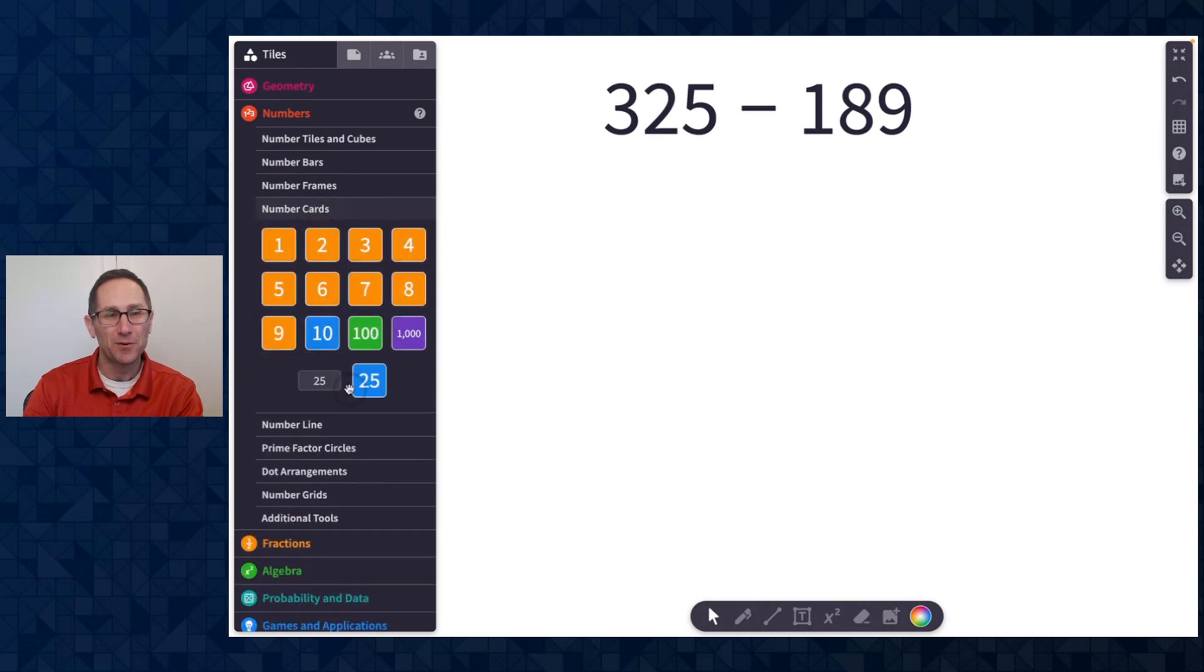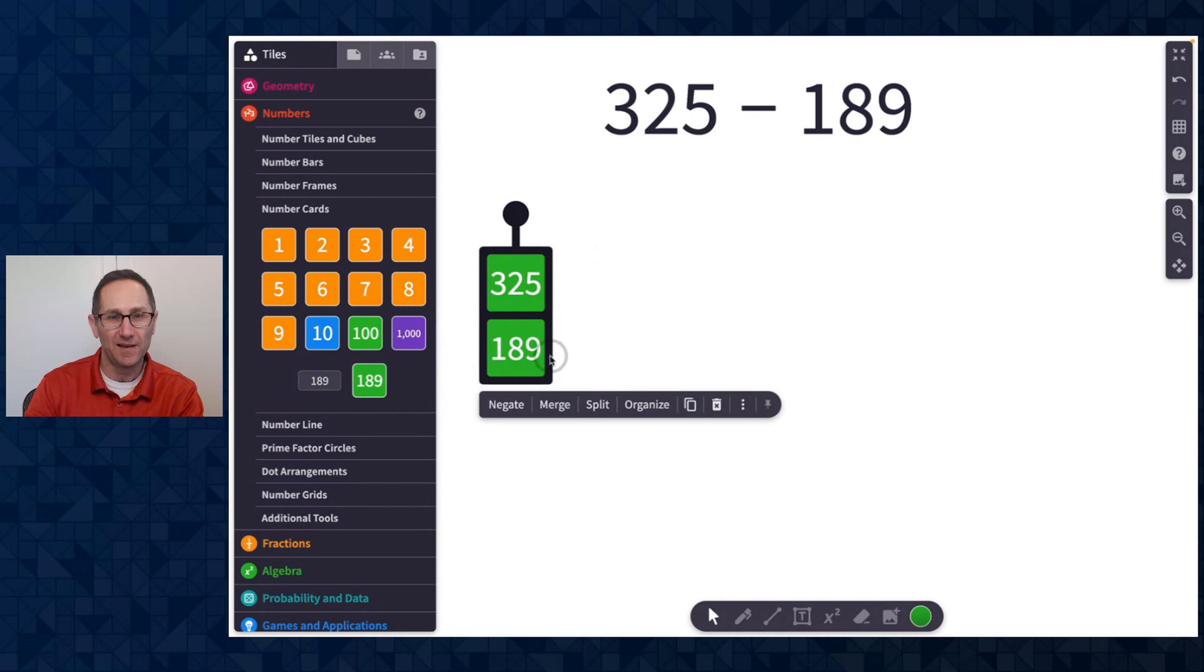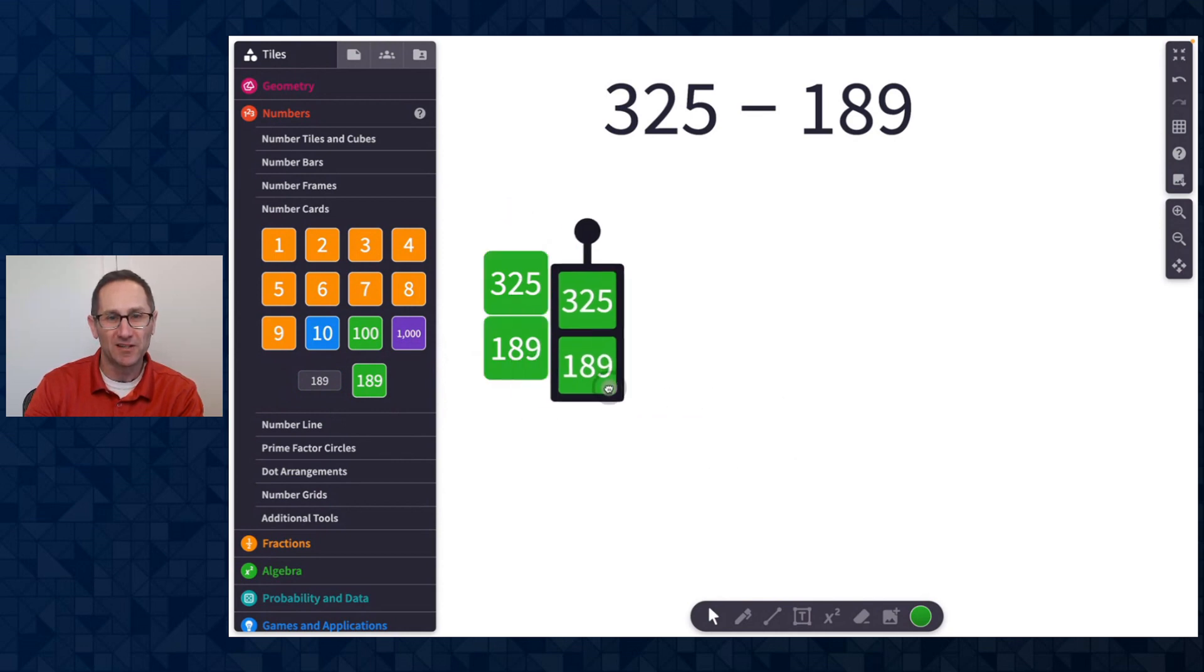Let me start with the number cards. I want to create a card for 325, so I'll go to the input field here, hit delete twice to create 325, drag this onto the canvas, and then do the same for 189. Here are the two cards. I'm going to move these over to the left and copy them using the copy button in the action bar.